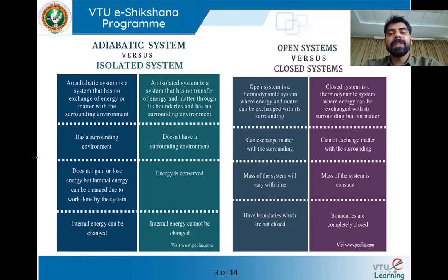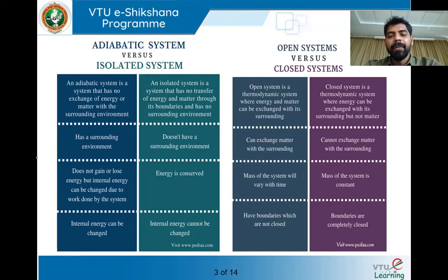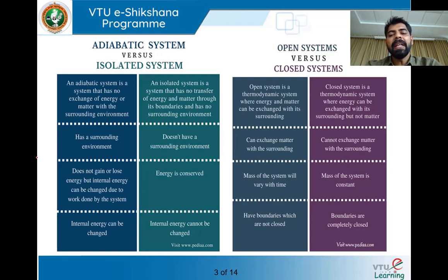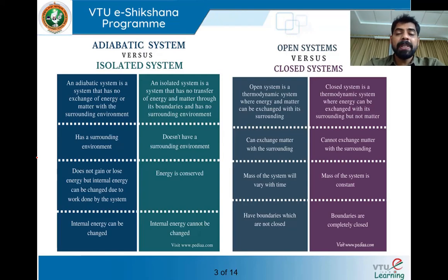In an open system, exchange of matter happens with the surrounding, but in a closed system there is no exchange of mass. Mass of the system will vary with time in an open system, whereas mass of the system is constant in a closed system because there is no exchange. An open system has boundaries which are not closed, allowing mass to transfer in or out as well as heat. In a closed system, the boundaries are completely closed, so mass transfer is totally avoided.